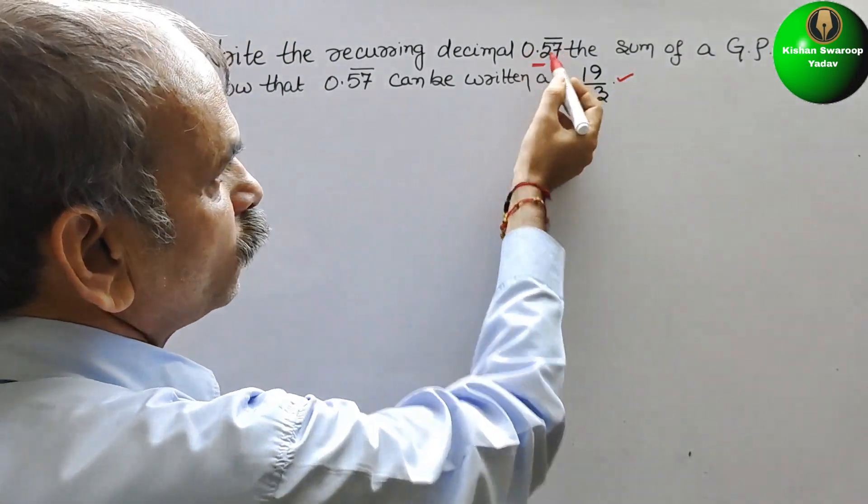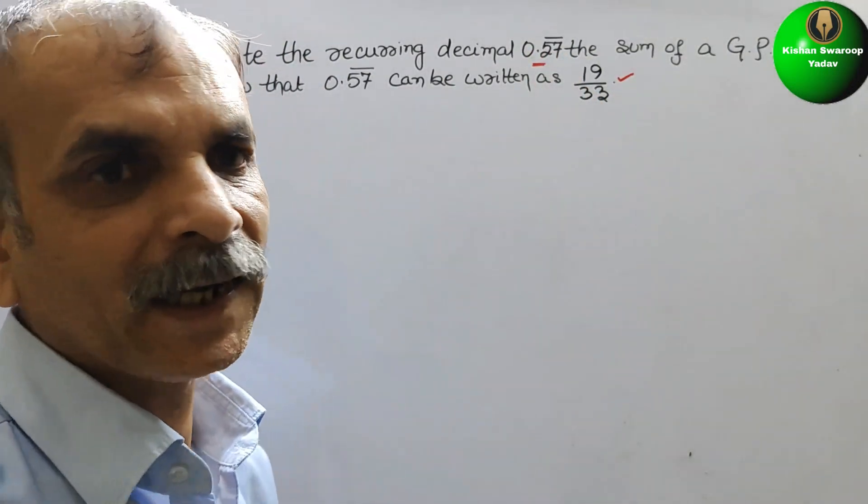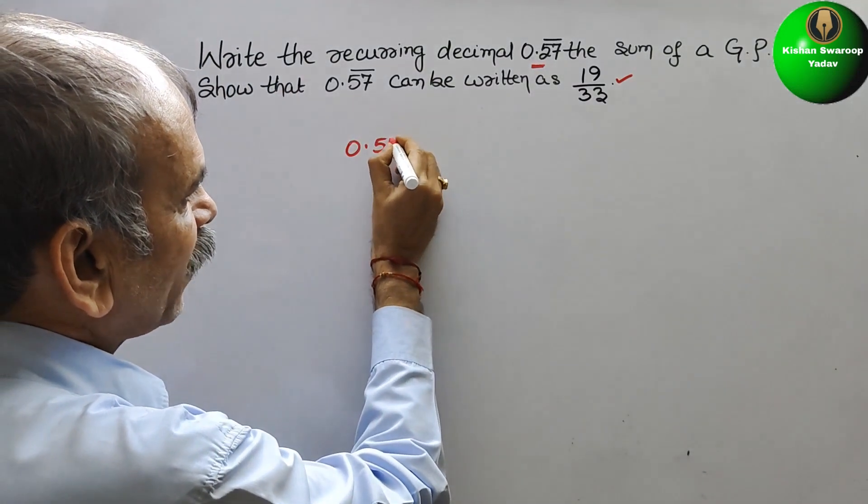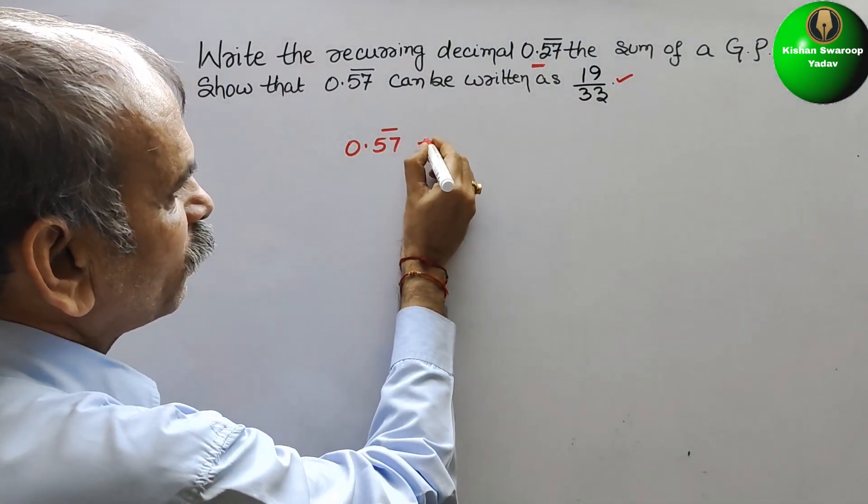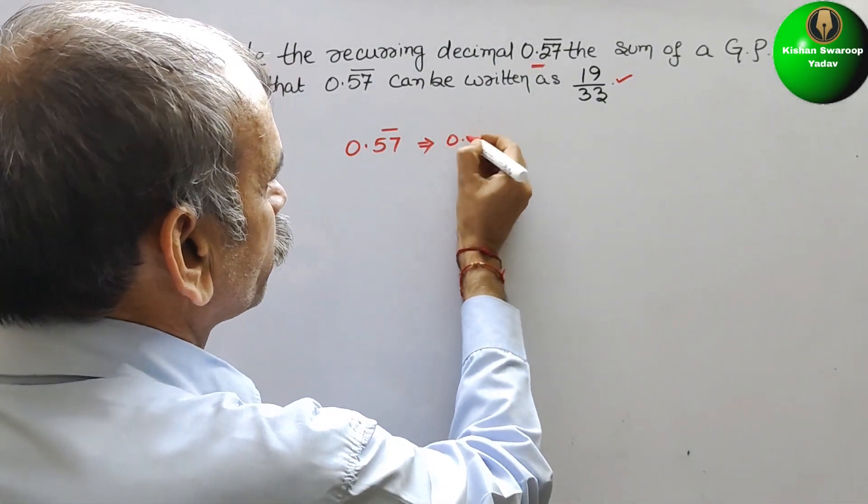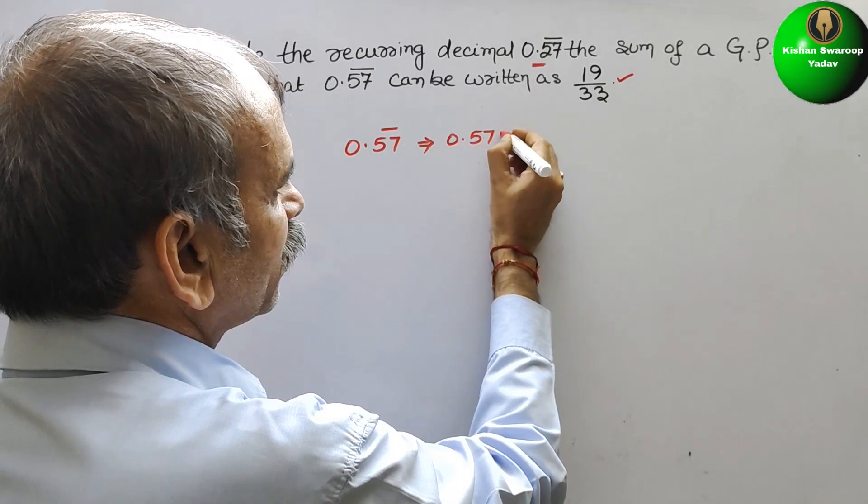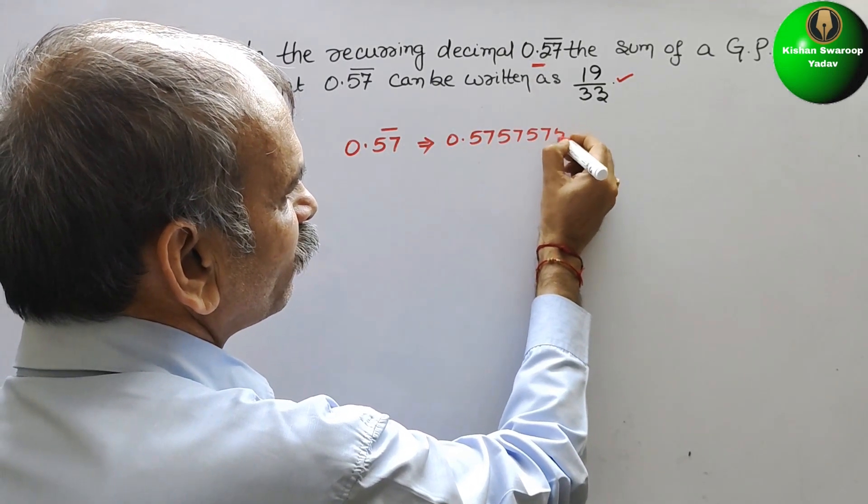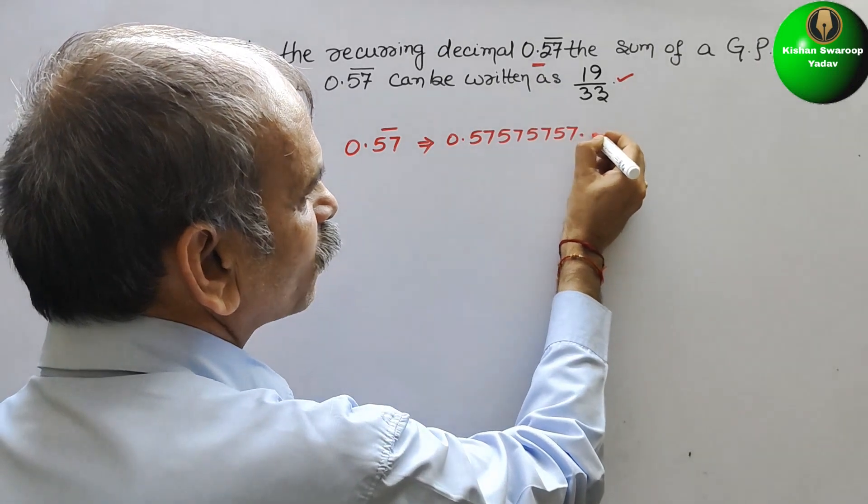So first is this 0.57, how we can write it. So we can say 0.57 bar. That is equal to 0.57, 5757, 5757, and so on.